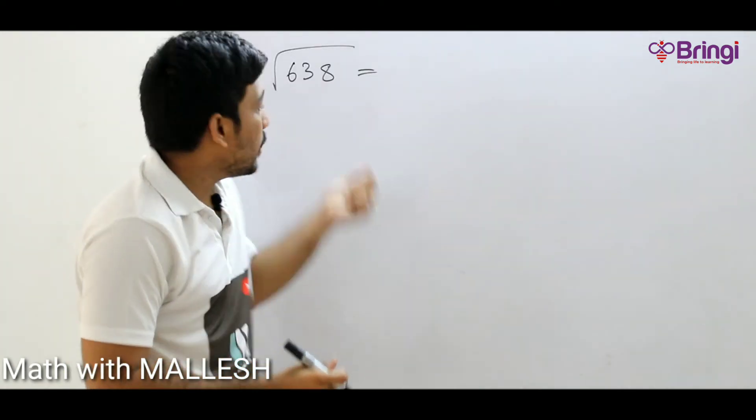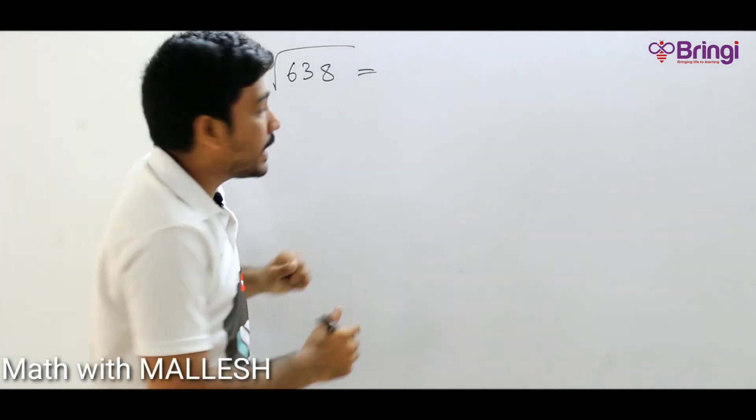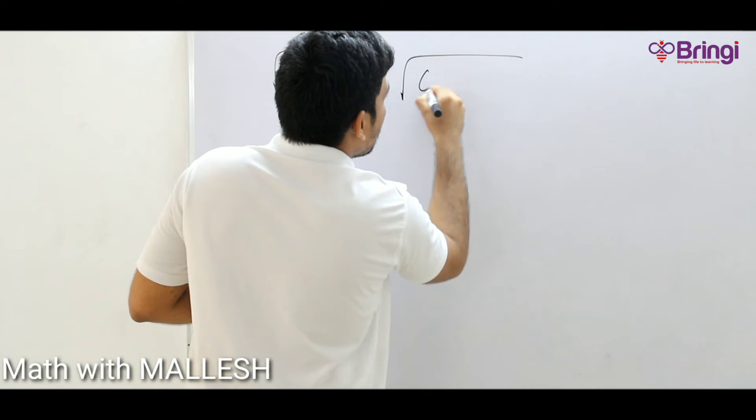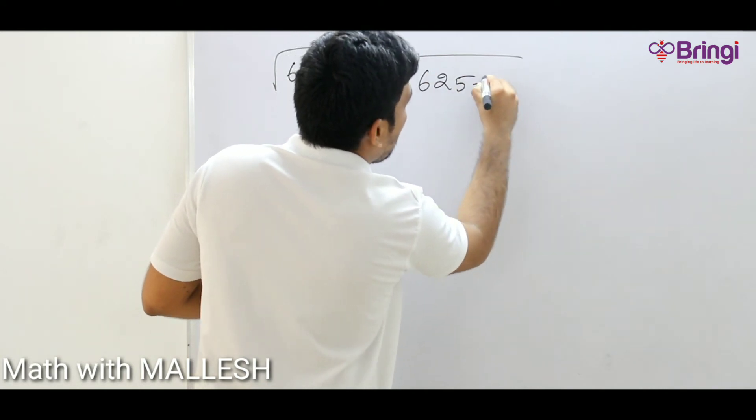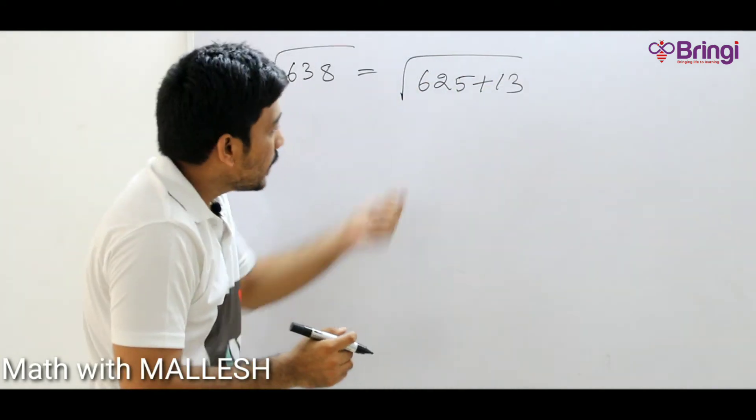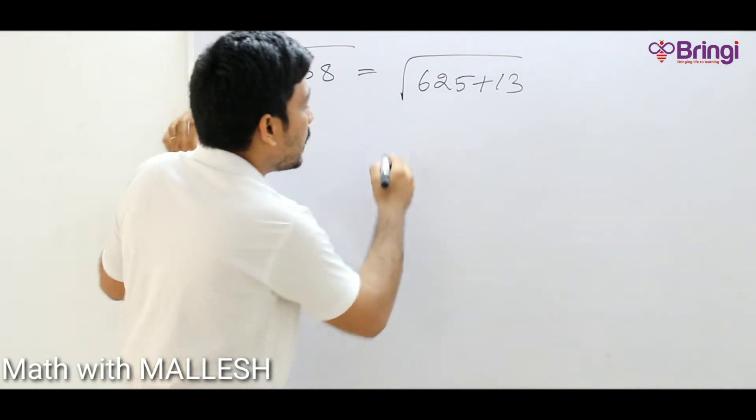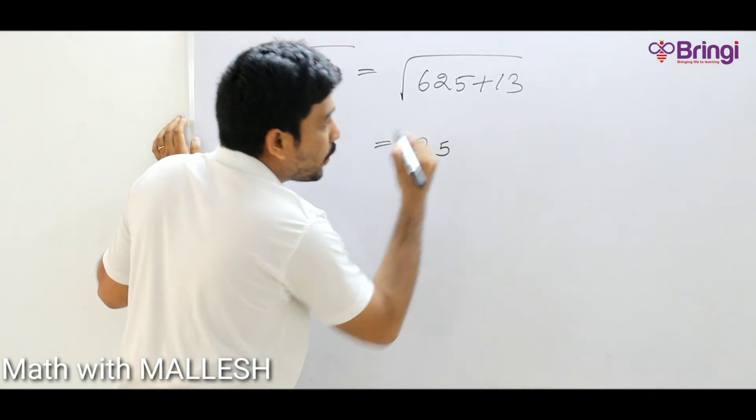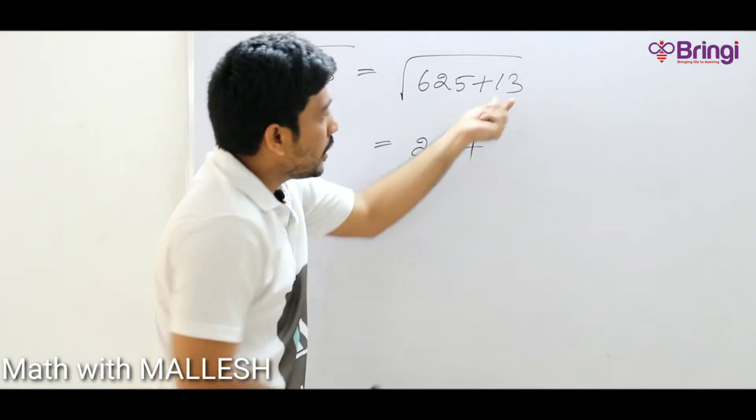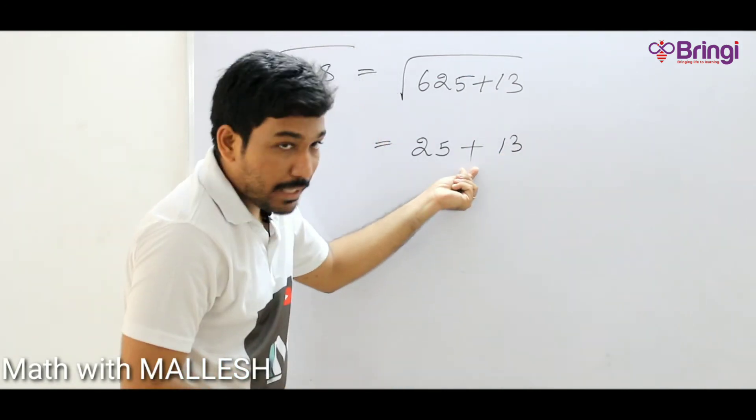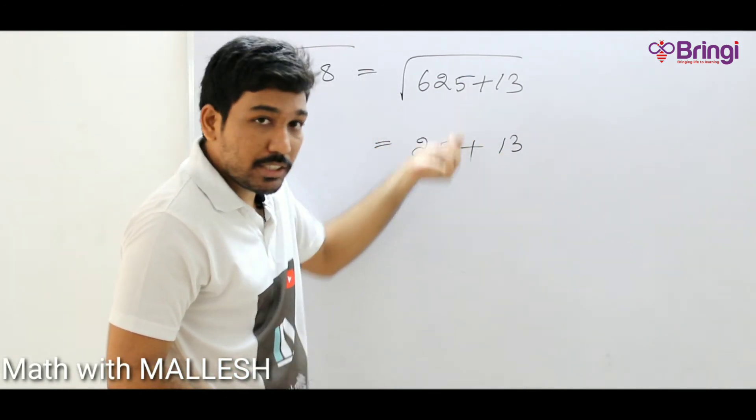Now moving on to somehow big number, next example, root 638. Now write 625 plus 13. 625 is a perfect square root number, its value is 25. Plus, what about next value? 13.